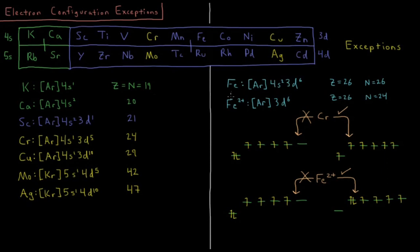So iron 2 plus is not argon 4s2 3d4. Iron 2 plus is argon 3d6. That's interesting, because we think that the 4s electrons are lower in energy than the 3d electrons, so why should we lose the 4s before the 3d?